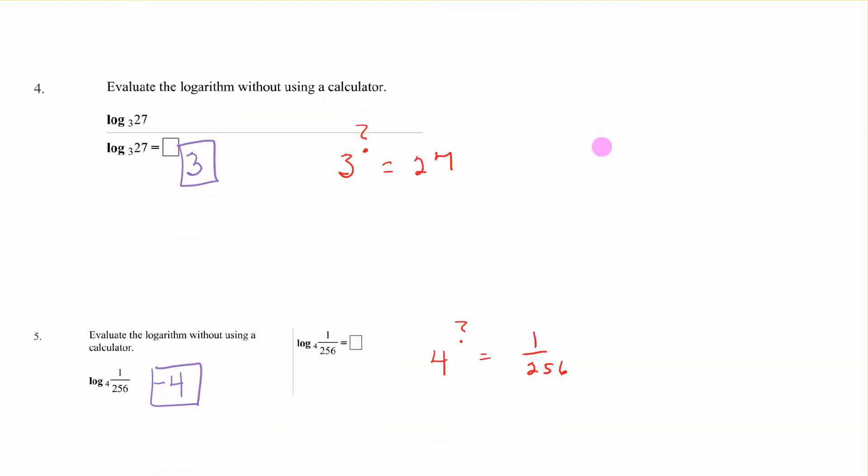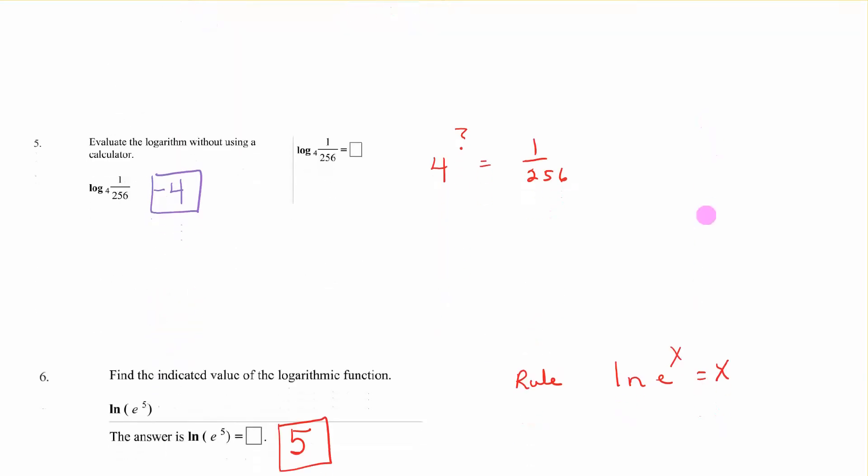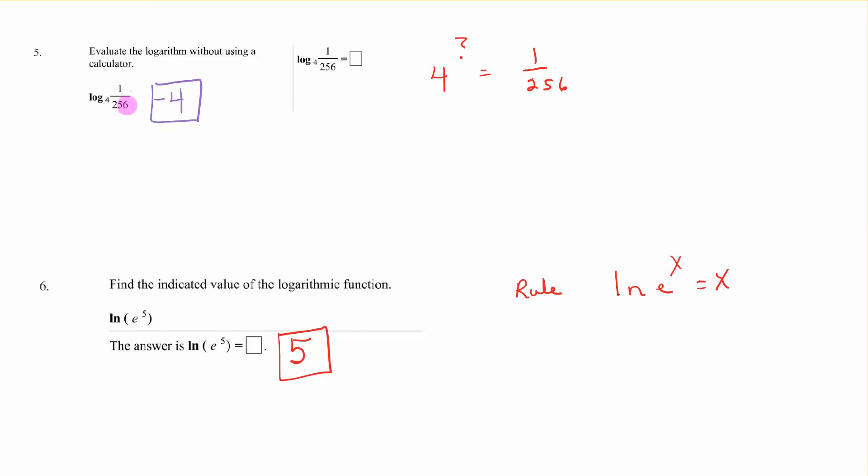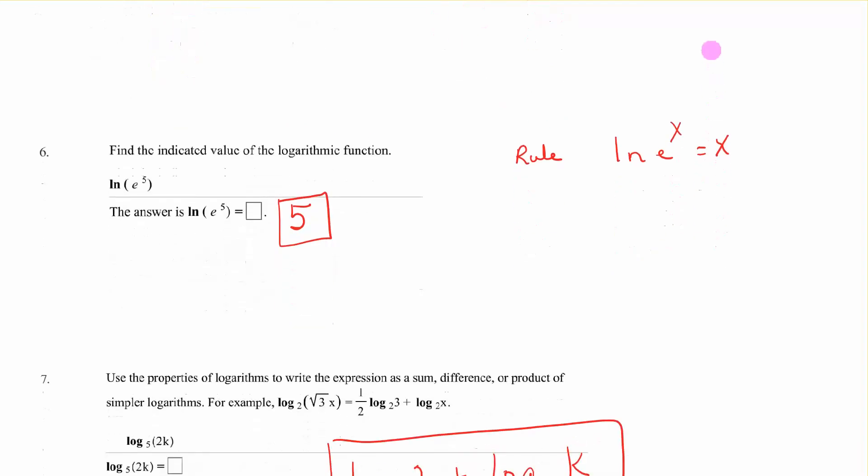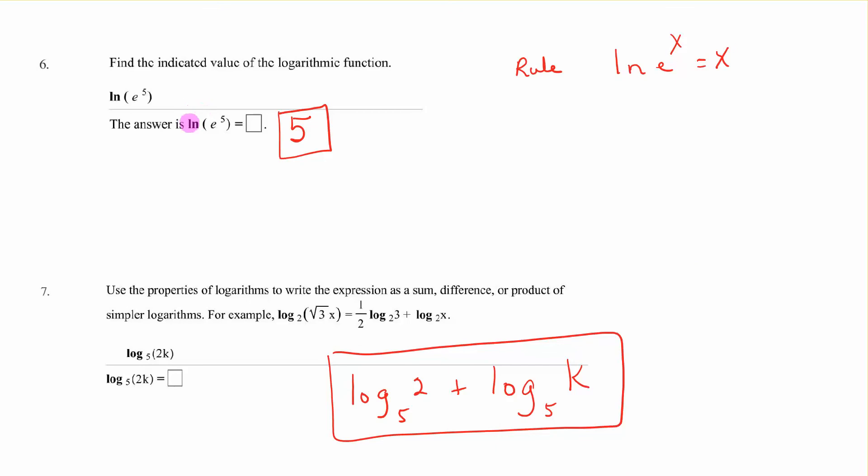Evaluate the log without using a calculator. And so what it's asking you, 3 to what power? Base to exponent. 3 to what power equals 27? That answer would be 3. Log base 4 of 1 over 256. So that's saying 4 to what power is going to give me 1 over 256? When we see fractions like that, we know that's going to be a negative number. 4 to the 4th would be 256. So 4 to the negative 4 would give us this. Ln of e to the 5th. Remember ln of e to the x equals x. So our answer would be 5.